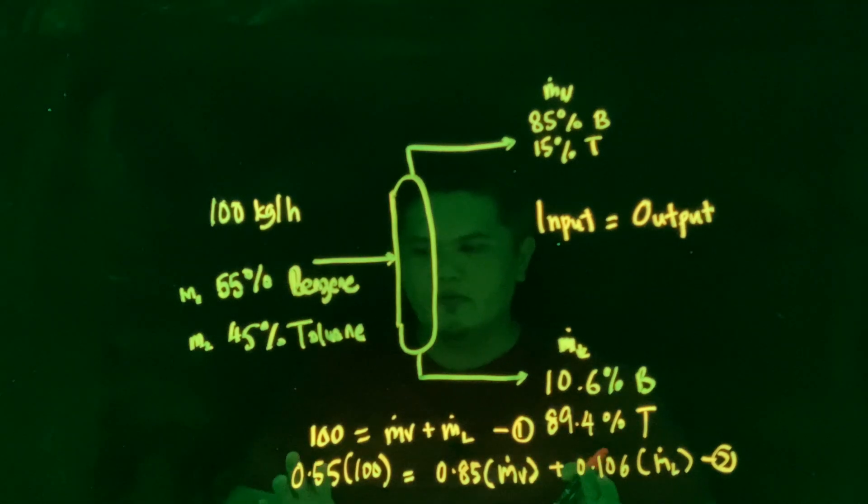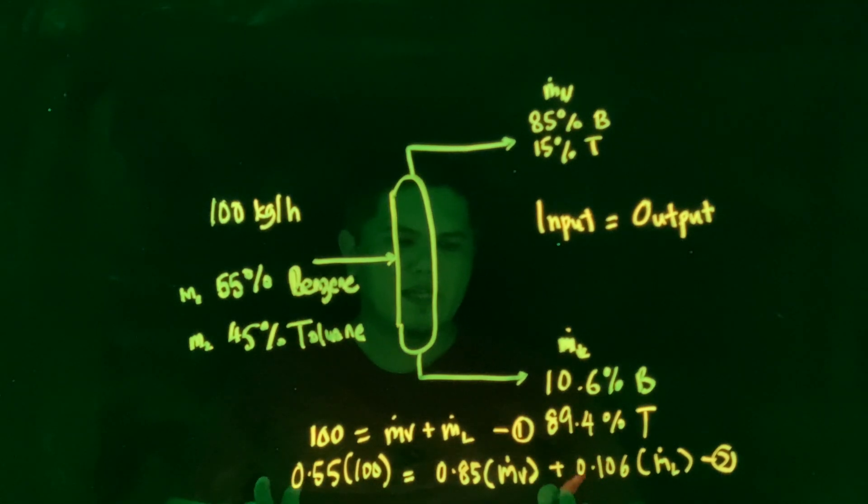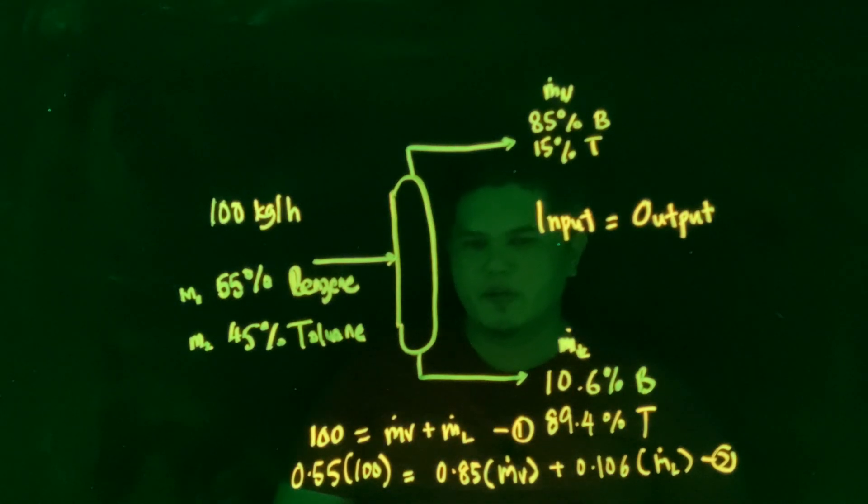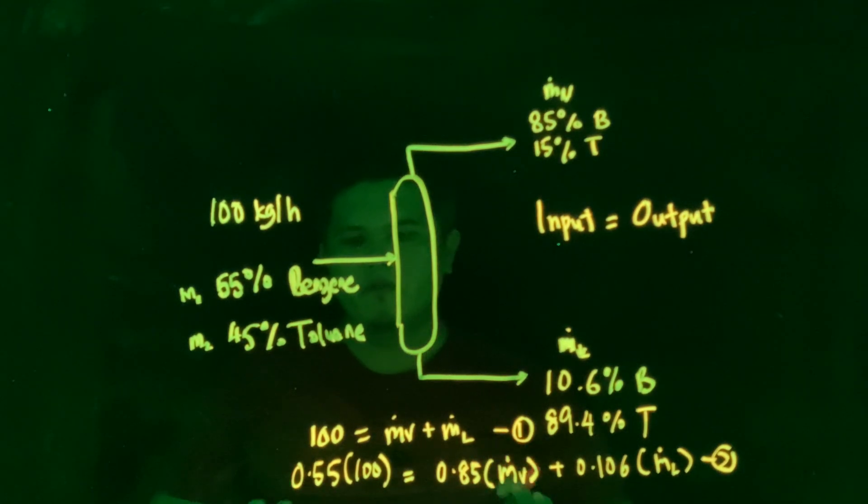So we want to try to solve this simultaneously, but before that we need to do some degree of freedom analysis. So we know that there are two equations and there are two unknowns. So in terms of our degree of freedom, 2 minus 2 equals to 0. So this is a solvable problem.